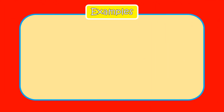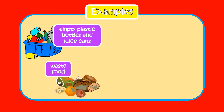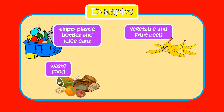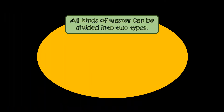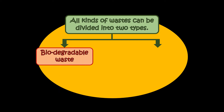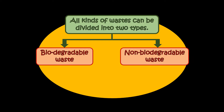Some examples of waste materials are empty plastic bottles and juice cans, waste food, vegetable and fruit peels, and waste paper. All kinds of wastes can be divided into two types: biodegradable waste and non-biodegradable waste.